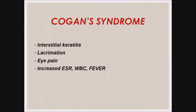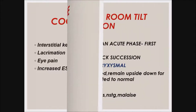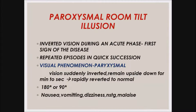Cogan syndrome features interstitial keratitis, lacrimation, eye pain, increased WBC, elevated ESR, and fever. Paroxysmal room tilt illusion is an inverted vision — not true vertigo — occurring during acute phases. The patient feels their vision suddenly inverted, remaining upside down for seconds to minutes before rapidly reverting to normal; the vision may be rotated 90 or 180 degrees. Associated symptoms include nausea, vomiting, dizziness, and malaise. It is due to a lesion in the midbrain or vestibulo-cerebellar region.